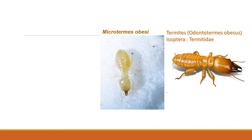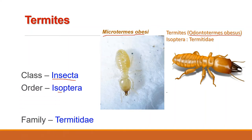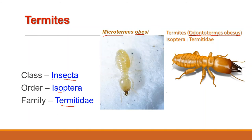The next pest of wheat is termites. There are two main species: Microtermes obesi and Odontotermes obesus. Termites belong to class Insecta, order Isoptera and family Termitidae. The genus of the first is Microtermes and species is obesi, and the genus of the second is Odontotermes and species is obesus.